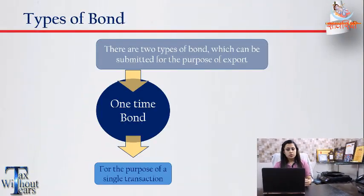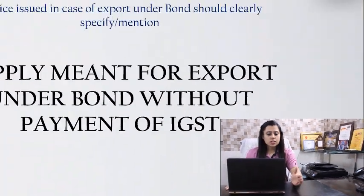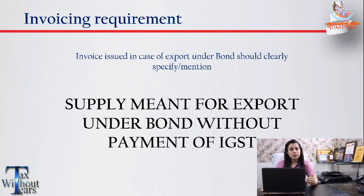In case of export, we can have two types of bonds: first is a one-time bond and second is the running bond. If you are not making exports frequently, you can opt for a one-time bond which will be valid only for one shipping bill. But if you are a frequent exporter, you should opt for a running bond, as you can export without worrying about the compliance procedure again and again until the bond limit is exhausted. In case of bonds, you must mention 'supply meant for export under bond without payment of IGST' on the invoice.